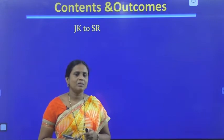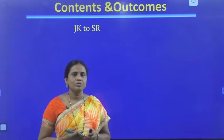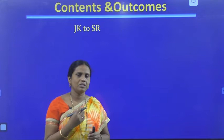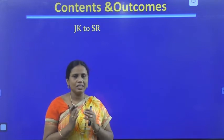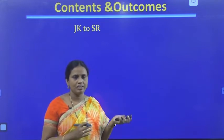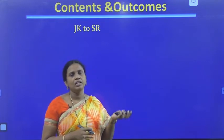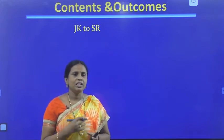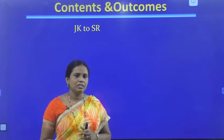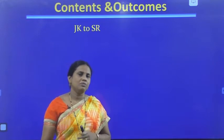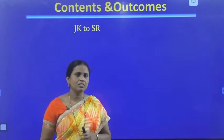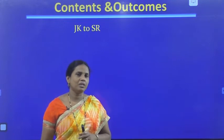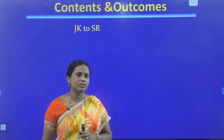First let us remember our procedure. We need to identify what is our required flip-flop and what is our available flip-flop. For the required flip-flop, we need to write the characteristic table, and for the available flip-flop, we need to write the excitation table. Then we will write the conversion table, derive the Boolean expressions, and using the obtained expressions, write the logical circuit.